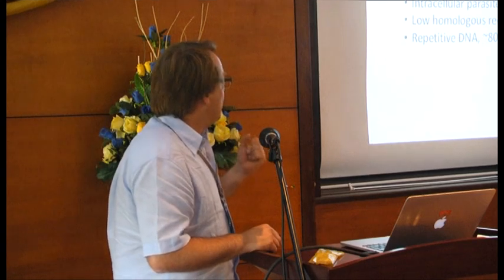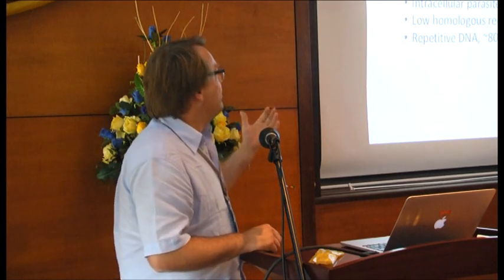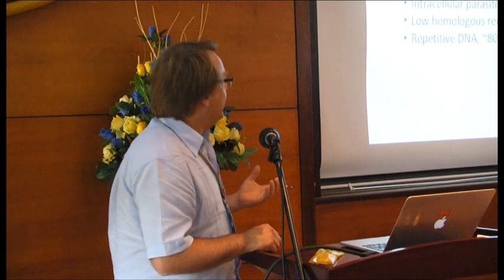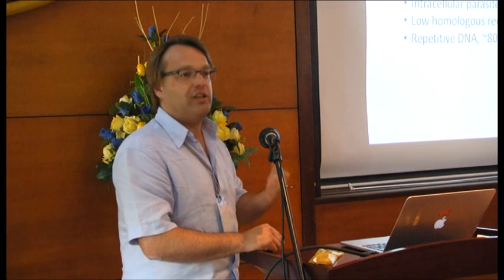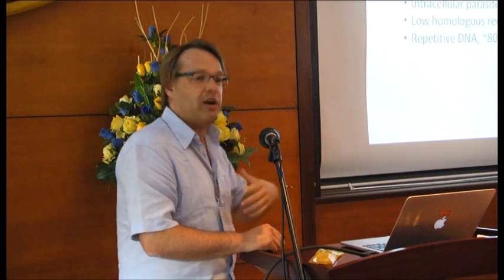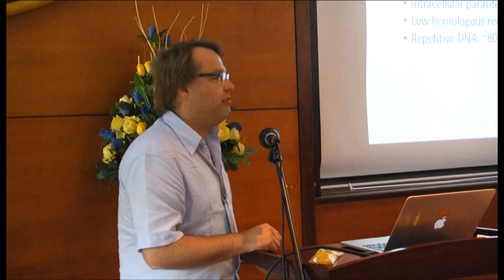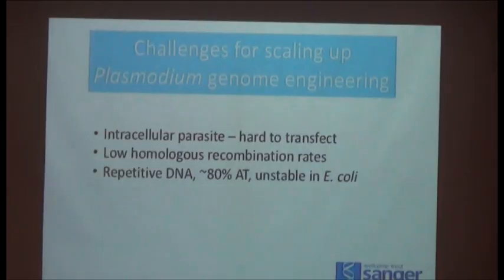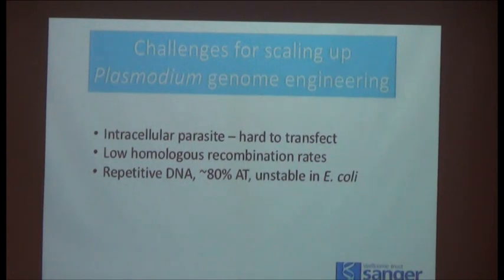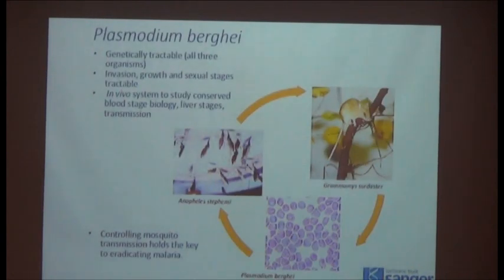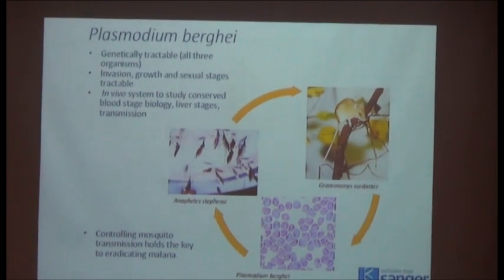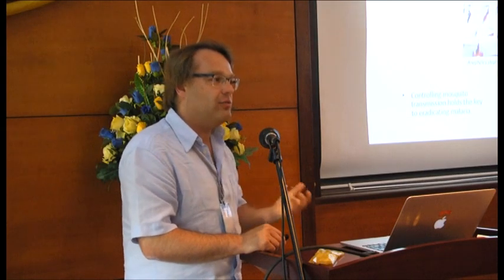We are dealing with organisms that have an inherently low homologous recombination rate, and whose DNA is incredibly AT-rich, repetitive, and very unstable in E. coli. So it becomes very hard to make efficient gene knockout vectors. RNA interference doesn't work, there were no efficient transposable systems, and even now in the absence of non-homologous end joining, CRISPR-Cas-based screens are not working.